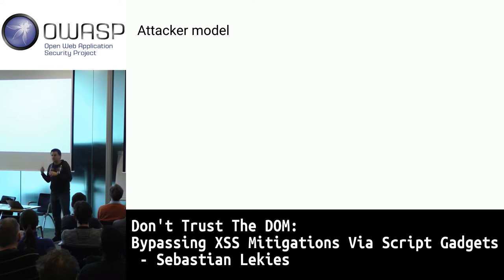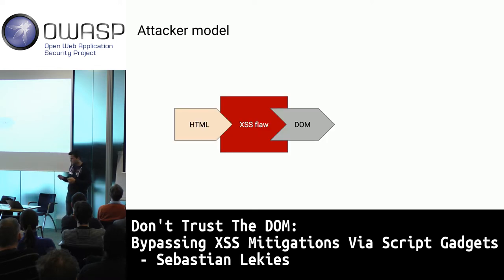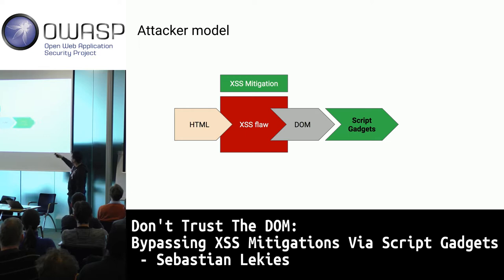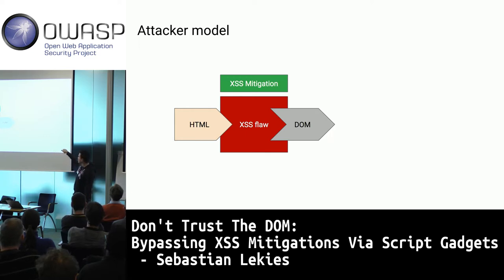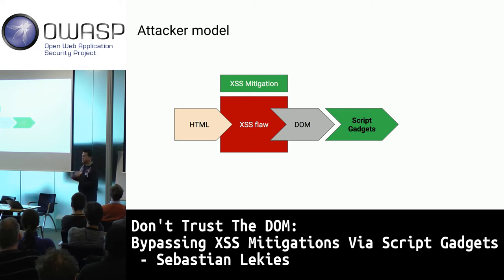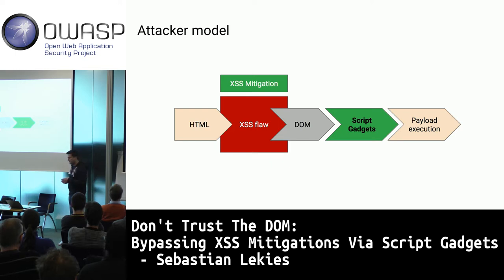Here's the attacker model. We have the Document Object Model with an XSS flaw in the page. Usually attackers inject HTML into the DOM, but the XSS mitigation prevents malicious content. Now there is a script gadget in the page that takes non-malicious content and upgrades it to execute the payload — circumventing all the XSS mitigations.